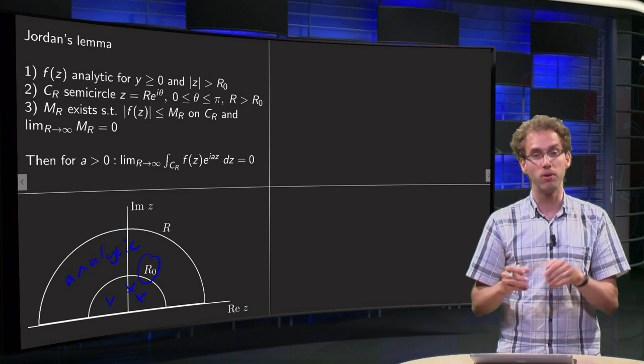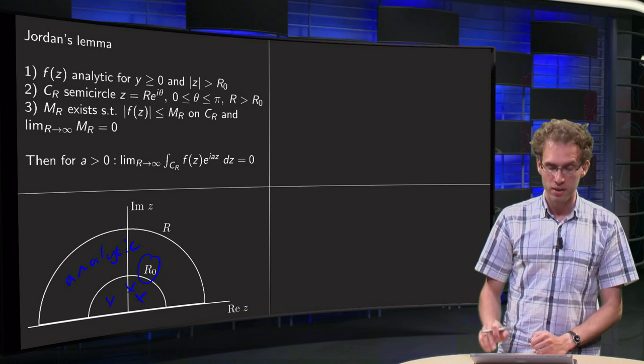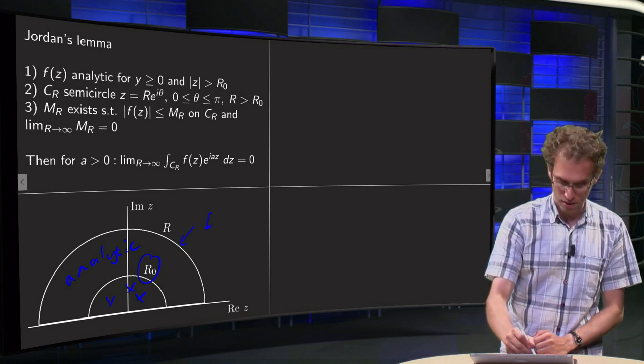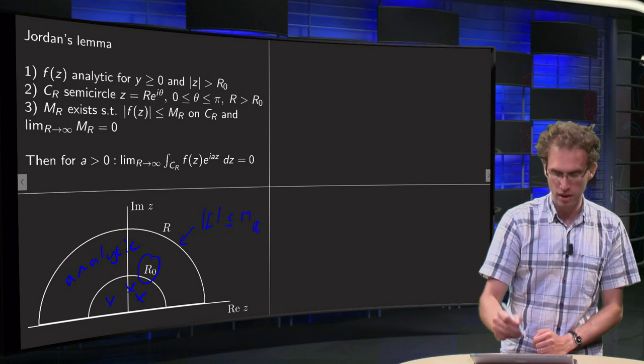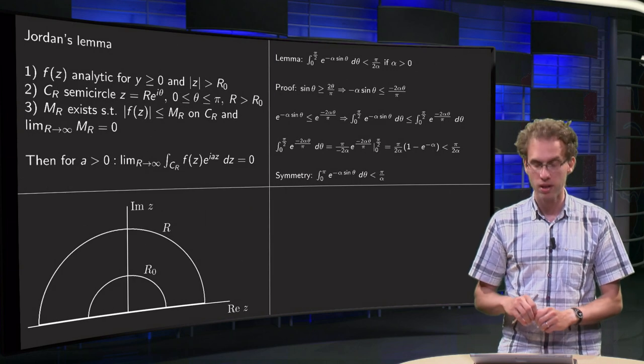Some capital R outside. Big R. And then you will have to show that f is smaller or equal than some M_R here, where M_R goes to zero. So that's the stage.